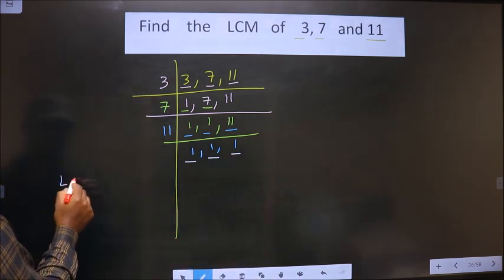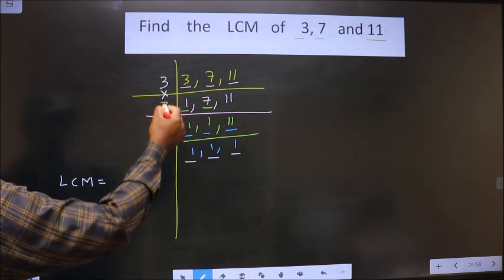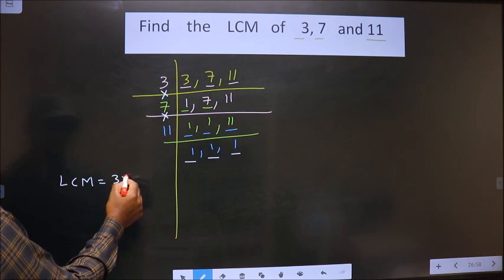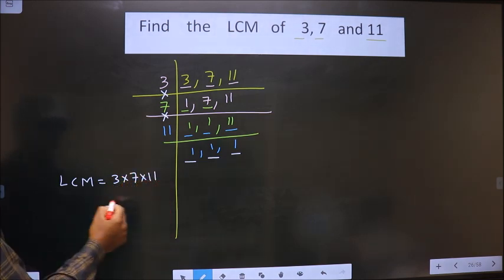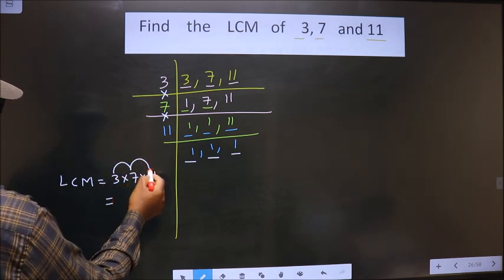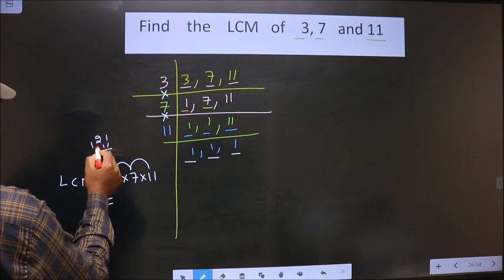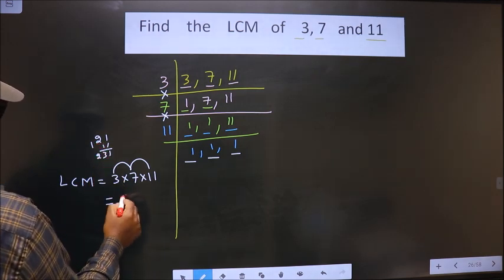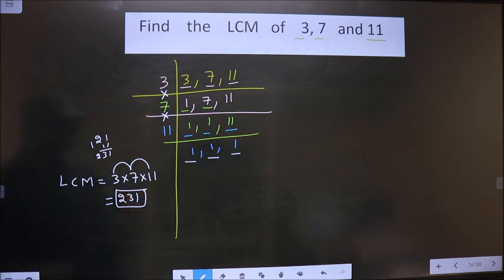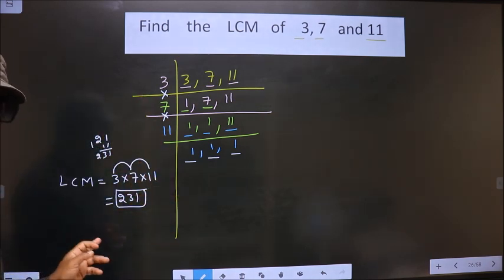So now our LCM is the product of these numbers. That is 3 into 7 into 11. So 3 into 7 is 21. 21 into 11 is 231. So 231 is our answer. Am I clear?